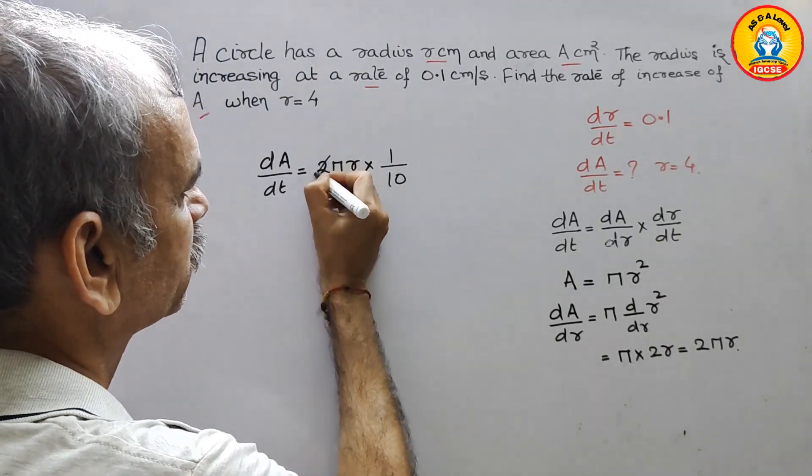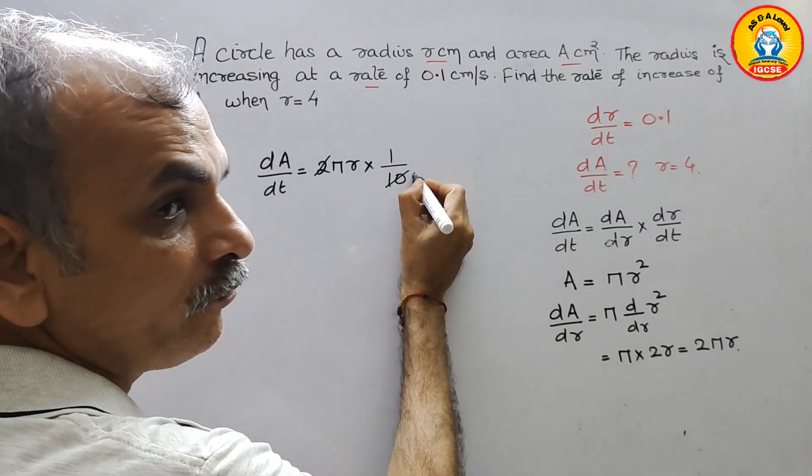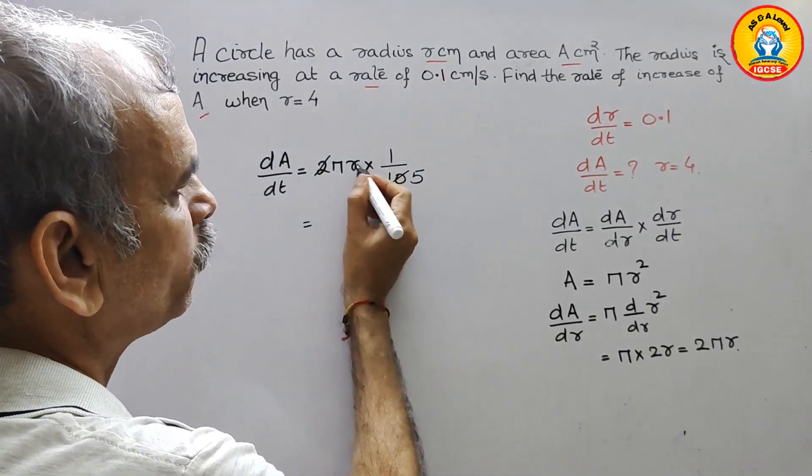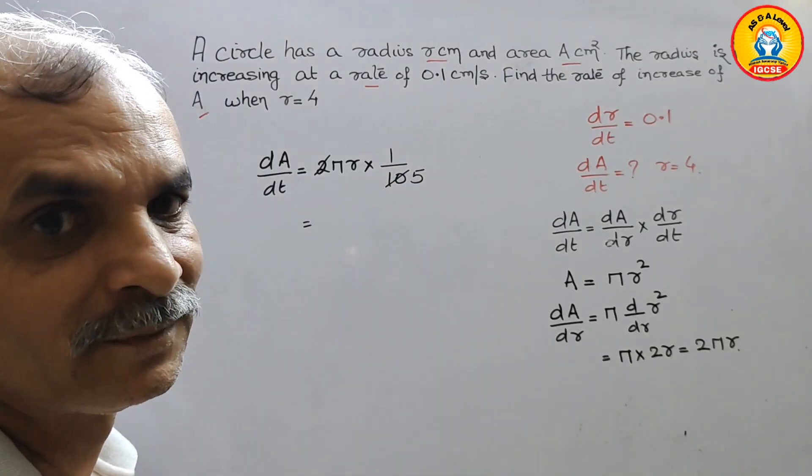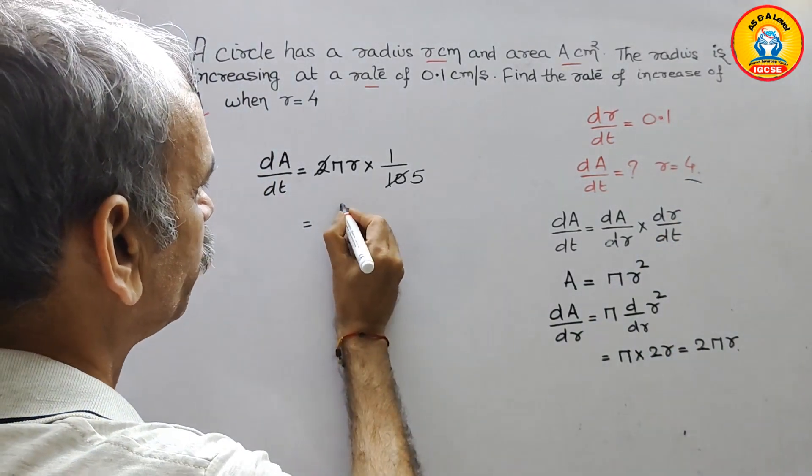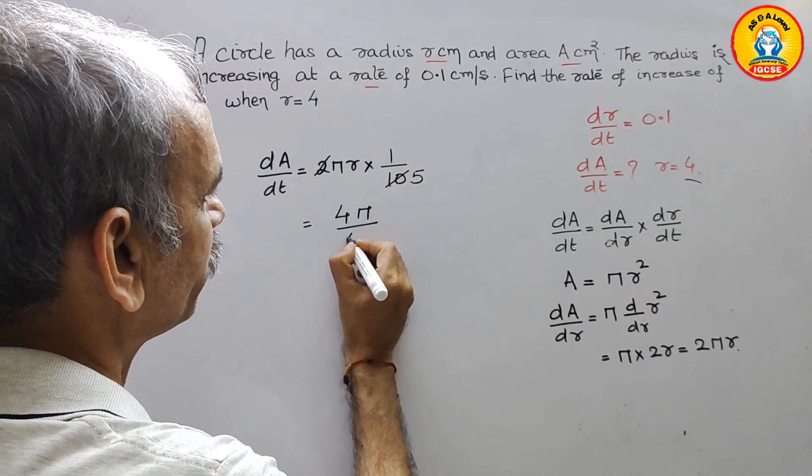Now reduce this. This will be 5. So now substitute the value r as 4. So we will get 4 pi by 5.